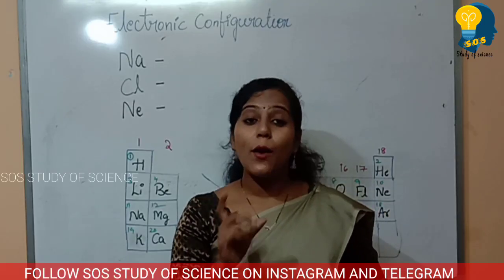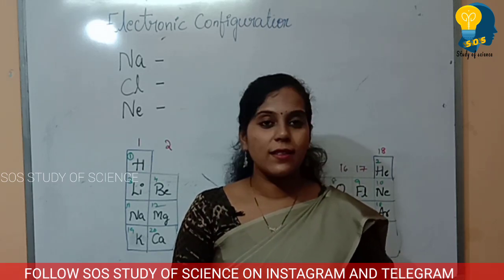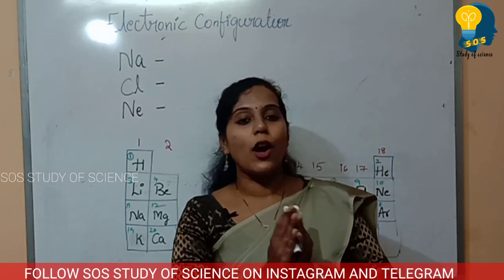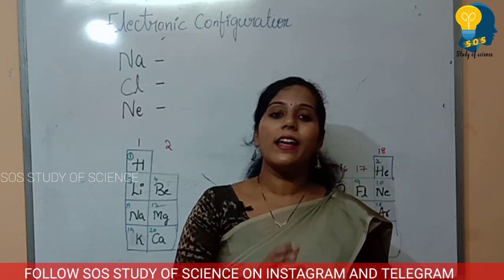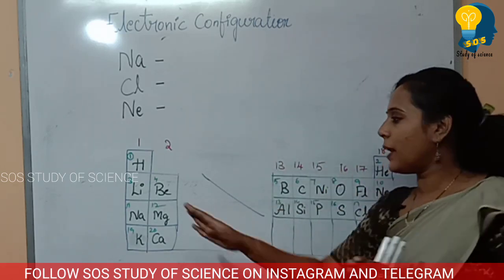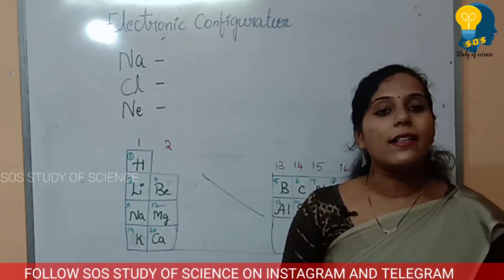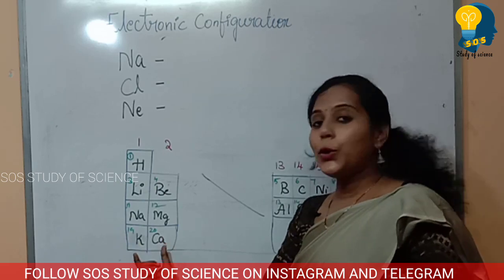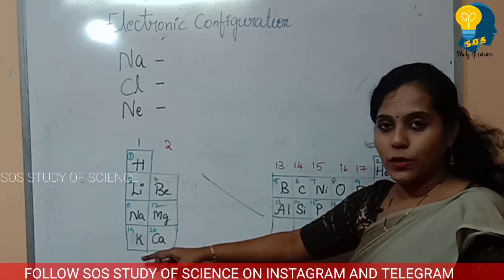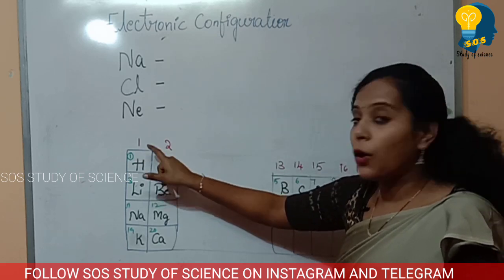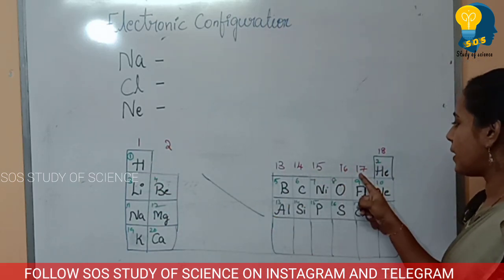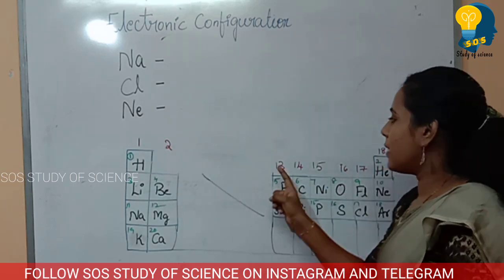For periodic classification of elements, you may get 2-mark or 3-mark questions on which group or period an element belongs to. You need to memorize the first 20 elements. Write 2 columns and 4 rows. The first column is Group 1, second column is Group 2, then Groups 13 through 18.